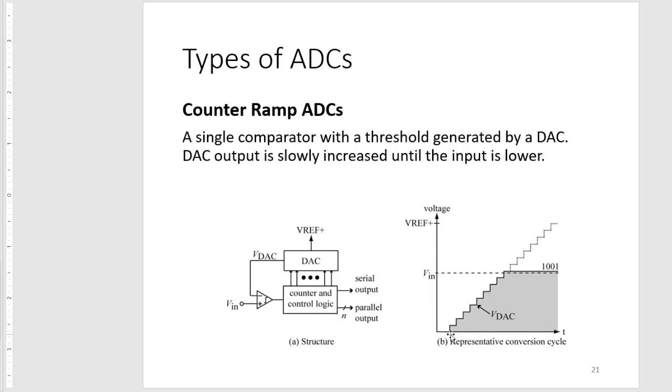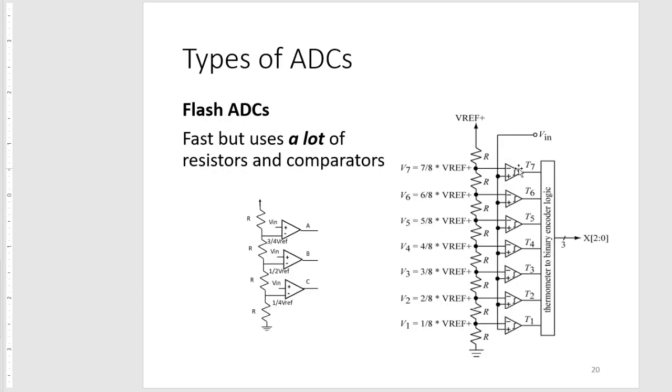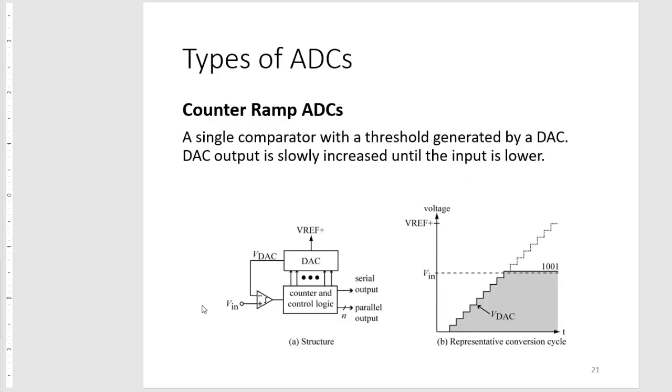Our DAC goes from the lowest DAC value and slowly ramps up to the highest ADC value, comparing each value to our input via a comparator. Instead of having eight different comparators, we just compare eight different times, wherein we always change our input.